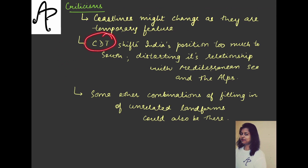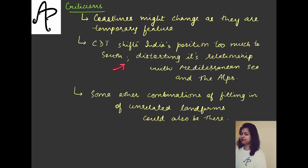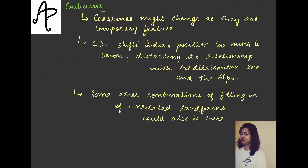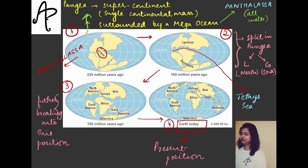Another criticism says that the continental drift theory shifts India's position too much to the south. The theory has shifted India's position very far south and it distorts the relationship with the Mediterranean Sea and the Alps. Please figure out the location of the Alps mountain and the Mediterranean Sea in your atlas.